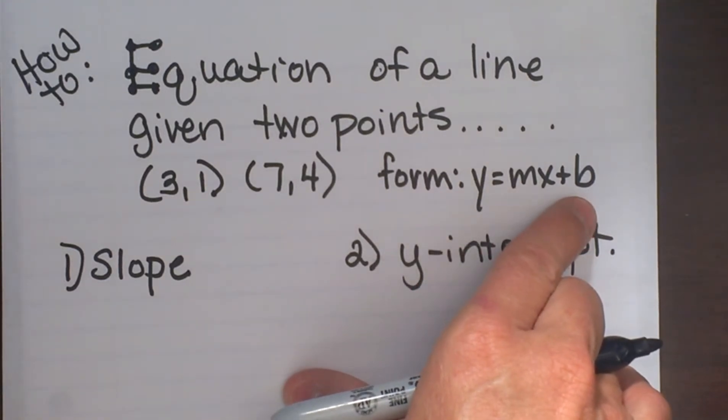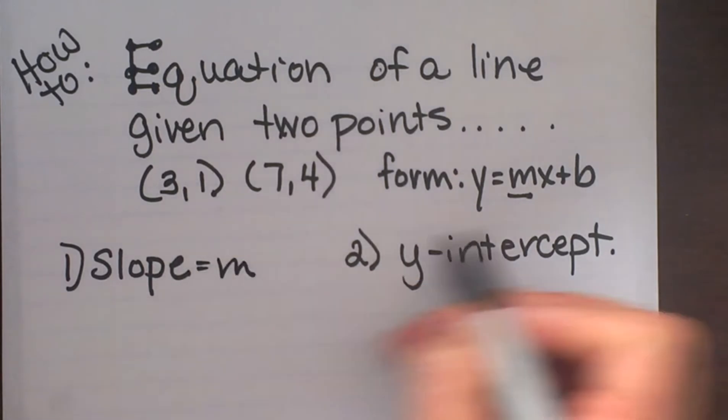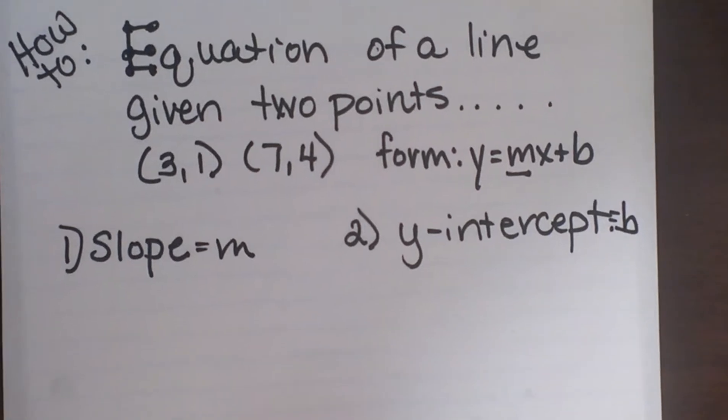So for an equation, we need two pieces of information. The first one is m, which is our slope, and the second one is b, which is our y-intercept. So let's go through and find each part.